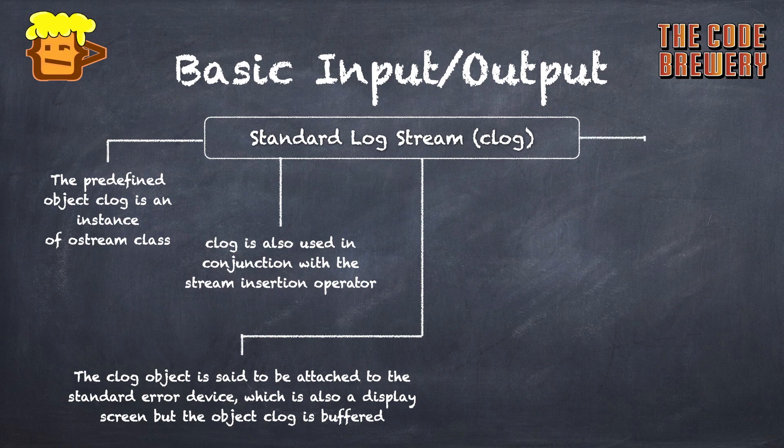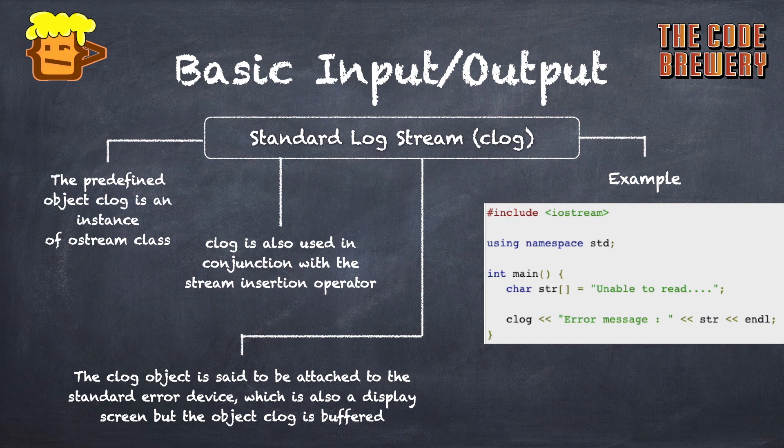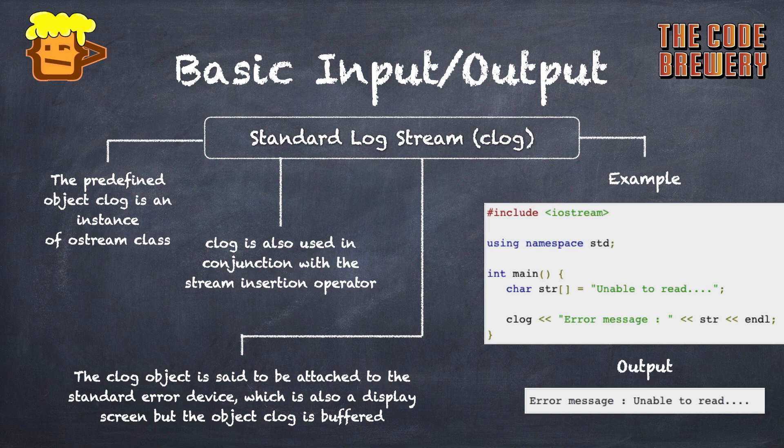While writing and executing programs, the differences become obvious. It's good practice to display error messages using the cerr stream, and for other log messages, clog should be used. That's the wrap for this topic. I hope you understood it well.